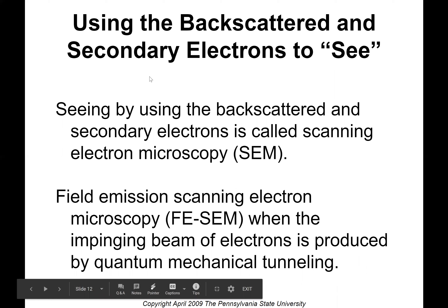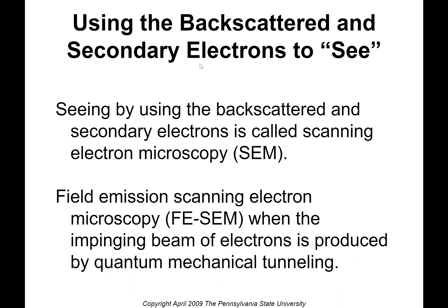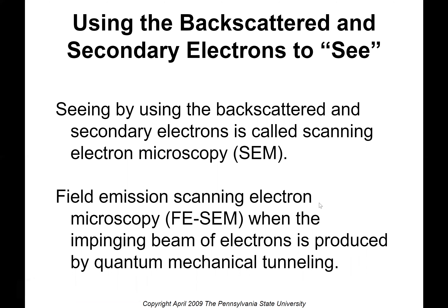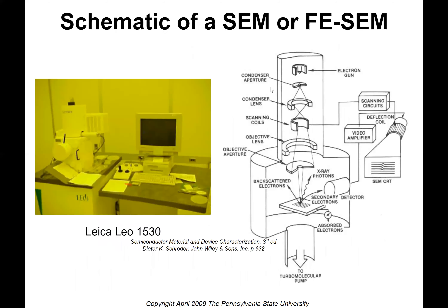Another way to determine information about a sample is using the backscattered and secondary electrons. Using backscattered and secondary electrons is called scanning electron microscopy. The first video talked about an SEM being used to see atoms — that is using backscattered and secondary electrons that kind of bounce back. The field emission scanning electron microscope, FESEM, is when the impinging beam is produced by quantum mechanical tunneling. The main thing to understand is the difference between TEM, which is transmission — going through — versus SEM where the electrons bounce back as backscattered or secondary electrons.